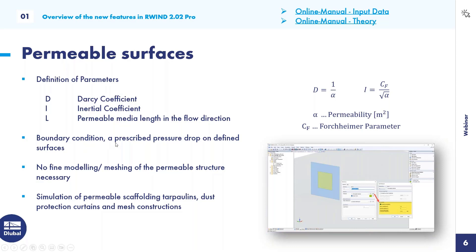The permeable surface is mainly a boundary condition — a prescribed pressure drop on a defined surface front or back. The main advantage is that no fine mesh modeling of the permeable structure is necessary. It allows simulation of scaffolding tarpaulins, dust protection curtains, and mesh constructions, which are usually very thin structures. This avoids the need for a very fine 3D solid mesh at those areas, which would significantly increase the number of finite elements.